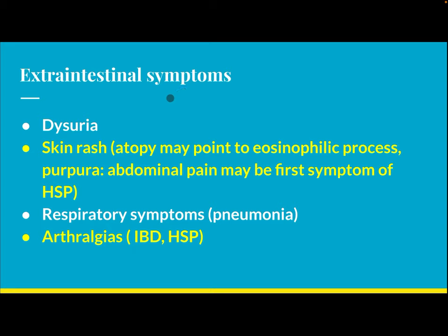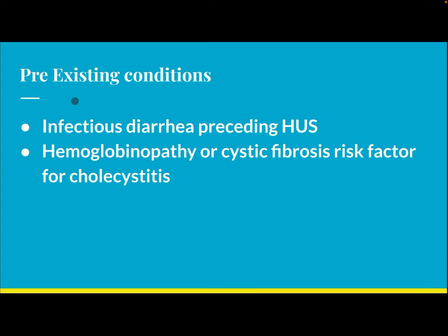Extra-intestinal symptoms include dysuria, skin rash, and atopy, which may point to an eosinophilic process. Purpura — abdominal pain may be the first symptom of Henoch-Schönlein Purpura. Respiratory symptoms suggest pneumonia. Arthralgia is associated with inflammatory bowel disease and Henoch-Schönlein Purpura.